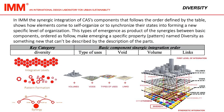In IMM, the synergic integration of CAS components following the order defined by the table shows how elements come to self-organize or synchronize their states into forming a new specific level of organization. These types of emergence, as a product of the synergies between basic components ordered as follows, make a specific property or pattern named diversity emerge — as something new that can be described beyond the description of the parts.